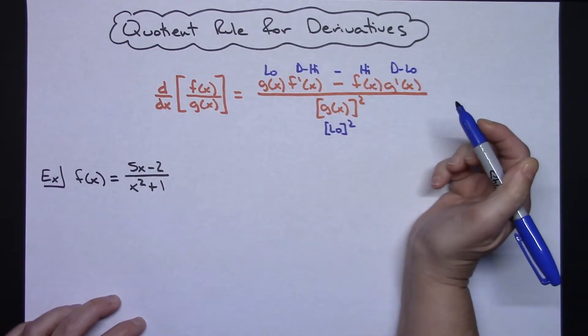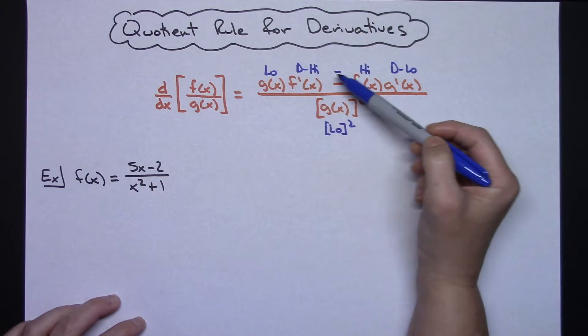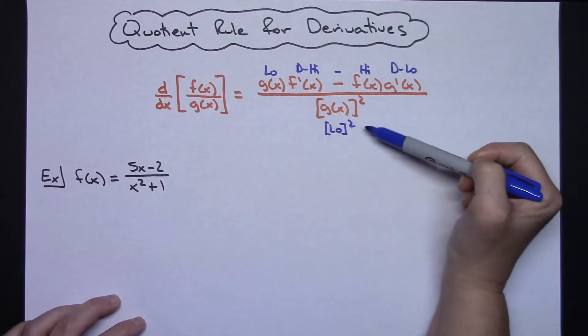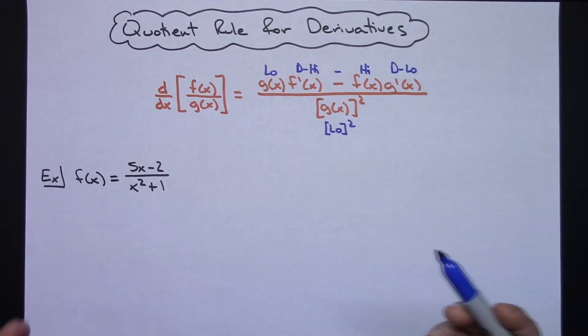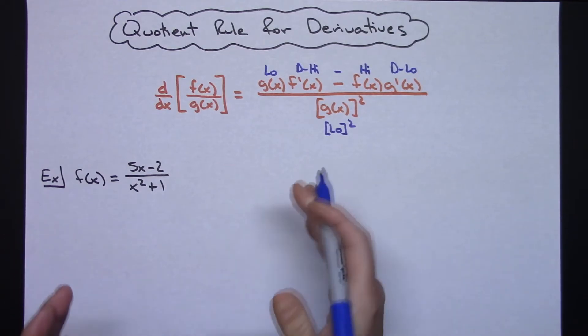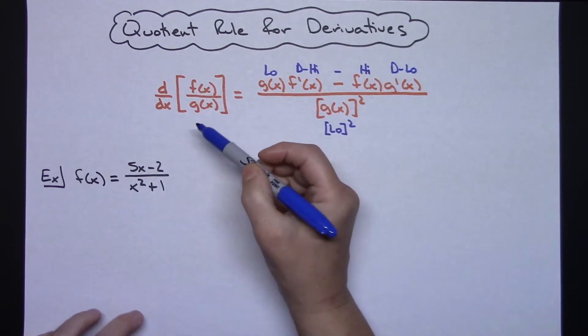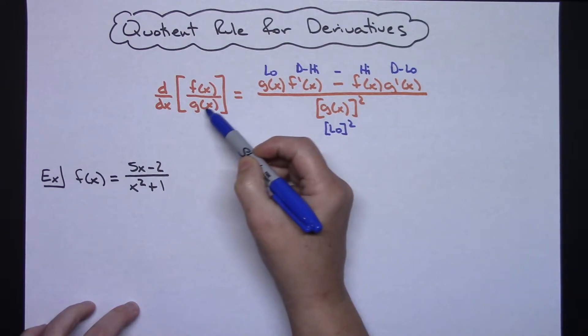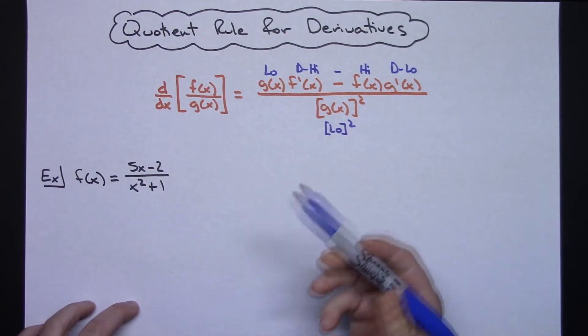Alright, that's kind of a catchy little thing once you get to saying it really fast. Low d high minus high d low all over low squared. It's just kind of a cute easy way to remember what you're taking the derivative of and where. Low being the polynomial that's in the denominator and high being what's in the numerator there.